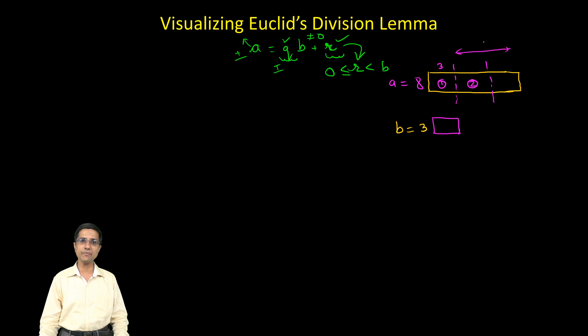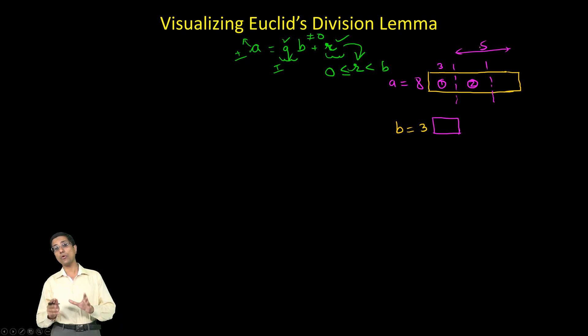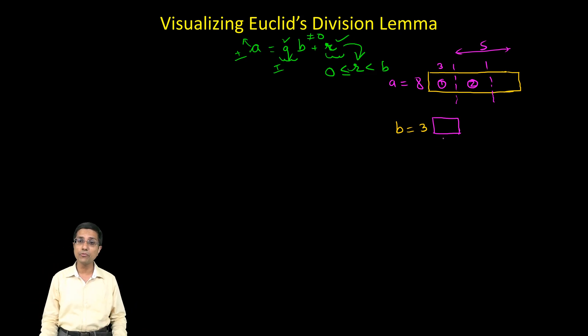I am left with 5. So this is the 5 remaining and as soon as you look at 5, you say that oh there is one more 3 inside it, so probably I can remove that also. So I remove the second 3 and now I am left with just this which is 2.